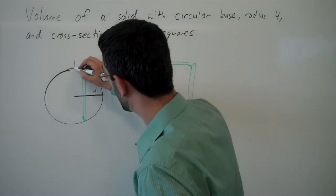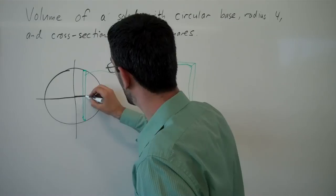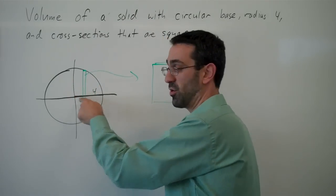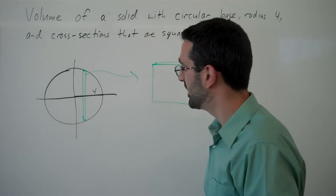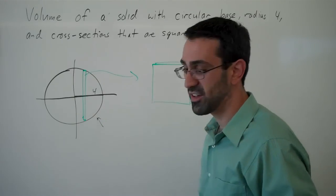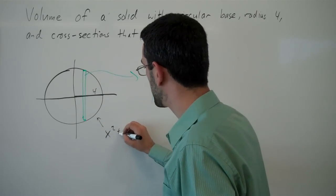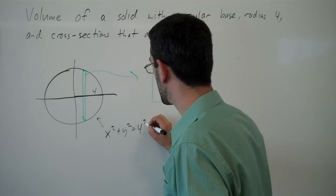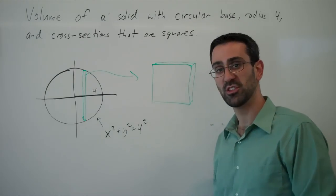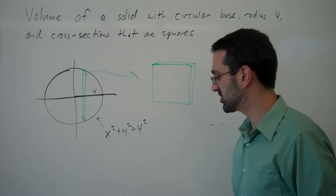So to do that, first thing we're going to do is introduce a coordinate system here so that we have an origin to work with. And then we can write an equation for this circle. So x squared plus y squared equals radius squared gives me an equation for that circle.